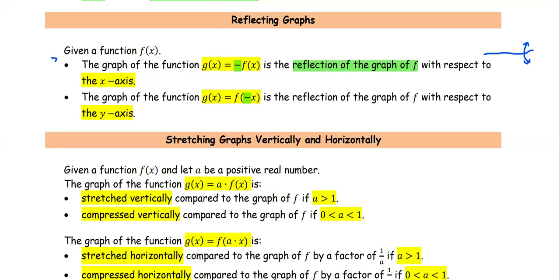In the case of g(x) = f(−x), the graph flips from the left to the right about the y-axis.